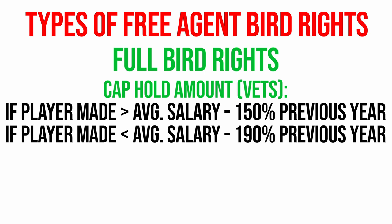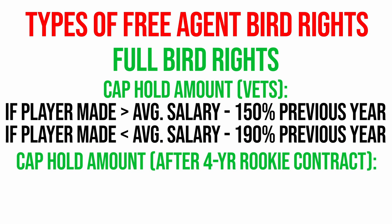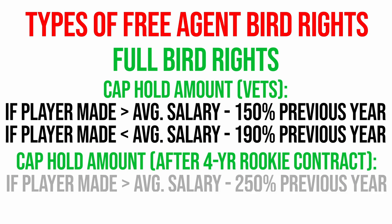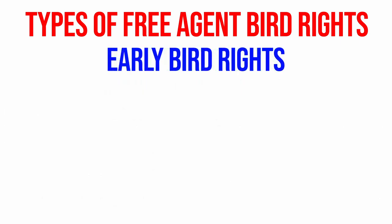The only full bird rights players that these standard percentages don't apply to are players coming off their four-year rookie contract as a first round pick. Those players count as 250% if they are above the average salary — which is usually only the top few picks. Most first round picks would be below the average salary and actually count as a 300% cap hold. So for example, if a player made 4 million on their rookie scale contract, their cap hold as a restricted free agent would be 12 million.